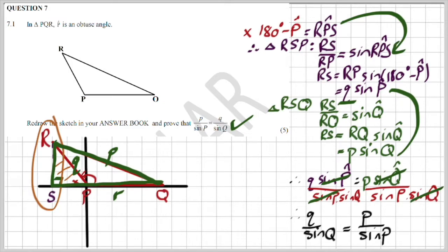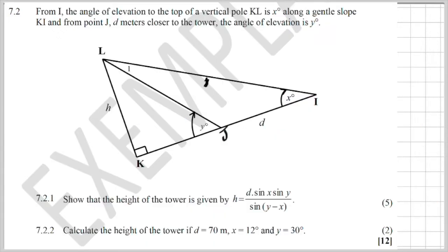So when we look at the meaty part of the question, it says there 7.2. From I, the angle of elevation to the vertices of KL is x degrees along a slope KI.